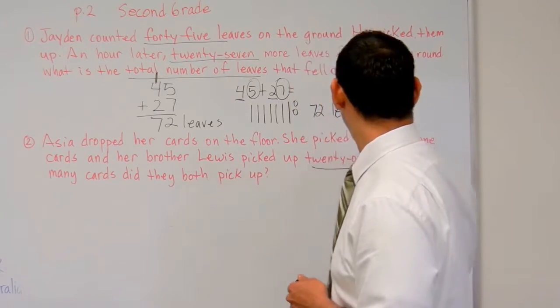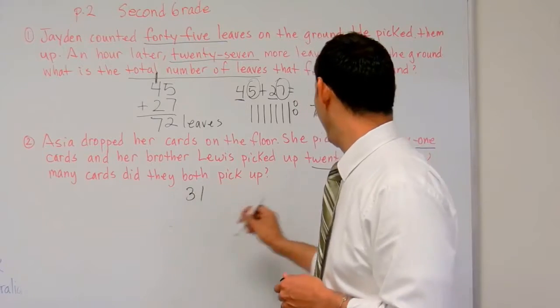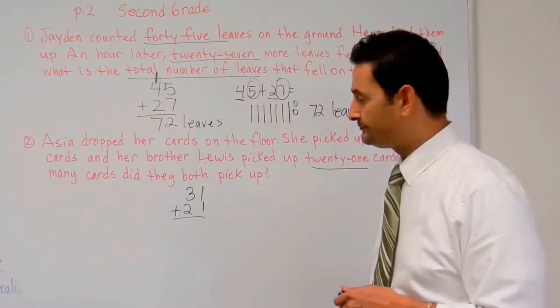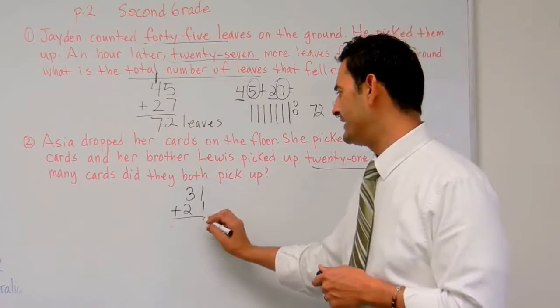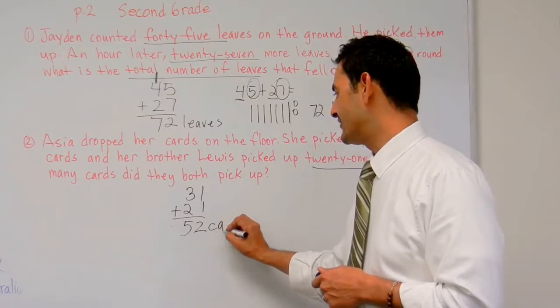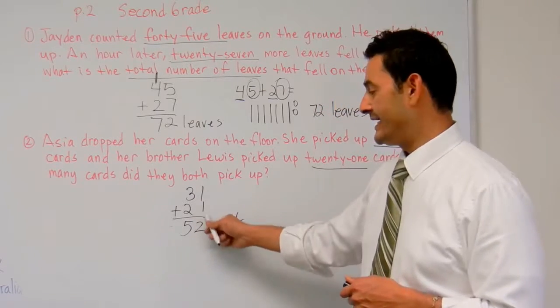So, again, we can go ahead and write 31 this way plus 21. We want to know how many they picked up. We can add, you know, the regular way. 1 plus 1 is 2. 3 plus 2 is 5. So, the answer is 52 cards. So, we can add vertically.